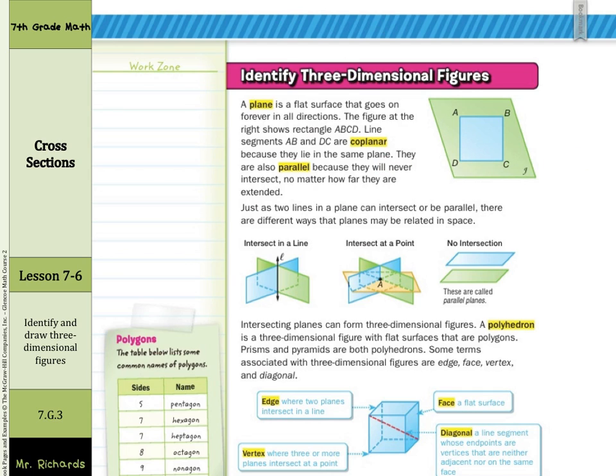Just as two lines in a plane can intersect or be parallel, there are different ways that planes may be related in space. Two planes can intersect in a line. As you can see, this plane intersects with this plane in a line. They can intersect in a point. Or there can be no intersection if they're parallel planes. Now, intersecting planes can form three-dimensional figures.